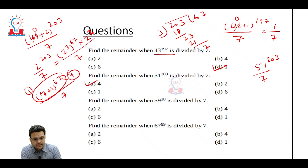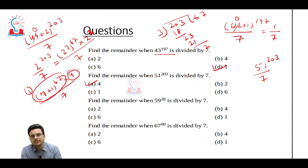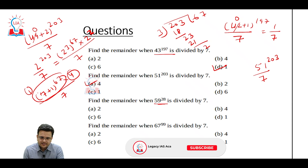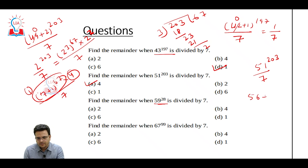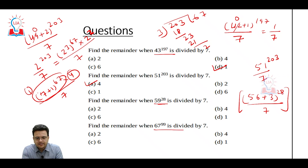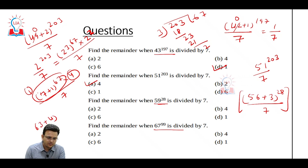Try to solve and put your comment. If you are not able to solve, just ask me and tomorrow again I will explain. Now see this question: 77 to the power — we can write 56 + 3 to the power 28 by 7. What can be the answer to this particular question? Write in your comment. And consider one more question: 67 — we can write 63 + 4 to the power 99. Try to solve it; in the next video I will give the answers also.